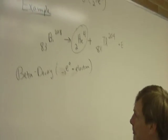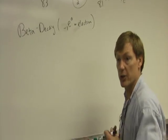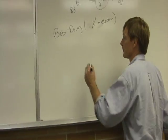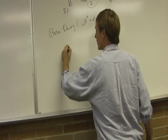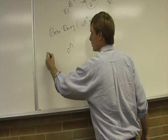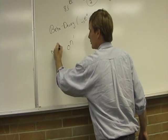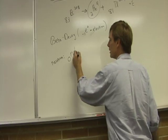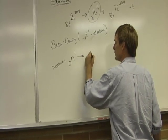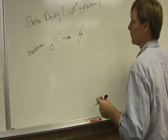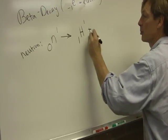And here's basically what happens. A neutron decays. And a neutron is given by this. No protons, one nucleon. And when the neutron decays, it decays into a proton, which is a hydrogen nucleus, plus an electron.